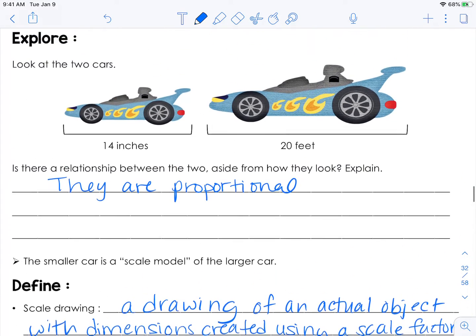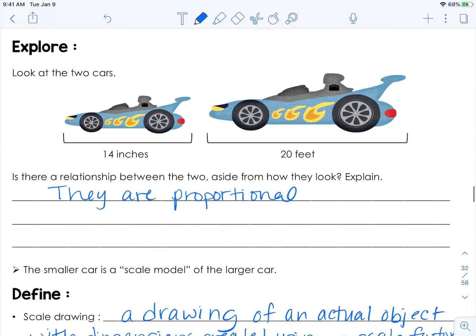So I'm going to slide back up here and show you. So a ratio here. So the length of the smaller car is 14 inches and the length of the actual car up here is 20 feet. So the ratio, the scale for these two cars, would be 14 inches to 20 feet.